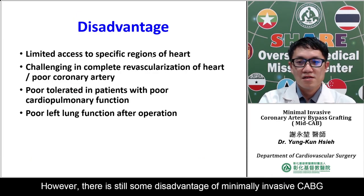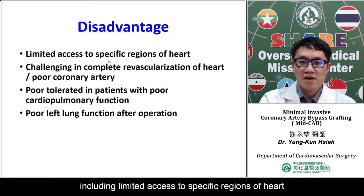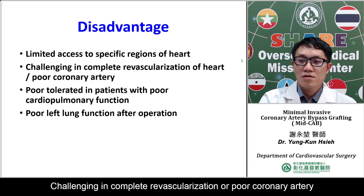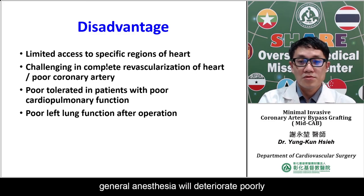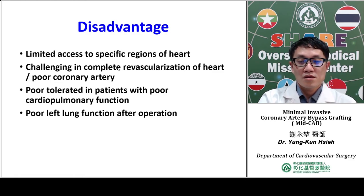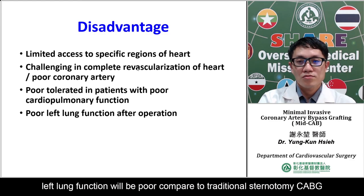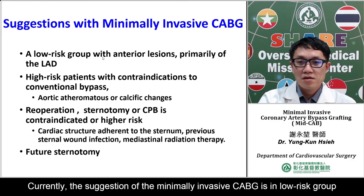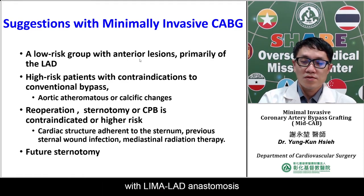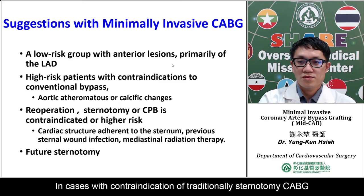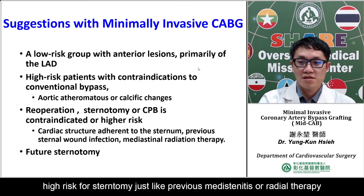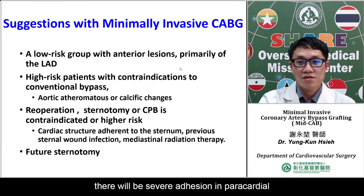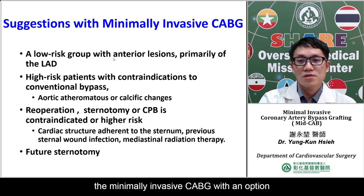However, there are still some disadvantages of minimal invasive CABG, including limited access to specific regions of the heart, challenges in achieving complete revascularization, and difficulty with poor-quality coronary arteries. Besides, if the patient has poor heart or lung function, general anesthesia will be poorly tolerated, and because we perform a left thoracotomy, left lung function will be compromised compared to traditional median sternotomy CABG. Currently, selection for minimal invasive CABG favors the low-risk group, especially those with anterior coronary artery disease for LIMA to LAD anastomosis. In cases with contraindications to traditional sternotomy CABG — such as severe atherosclerosis of the ascending aorta, high risk for sternal wound complications like previous mediastinitis or radiotherapy with severe pericardial adhesion — minimal invasive CABG is the same option.